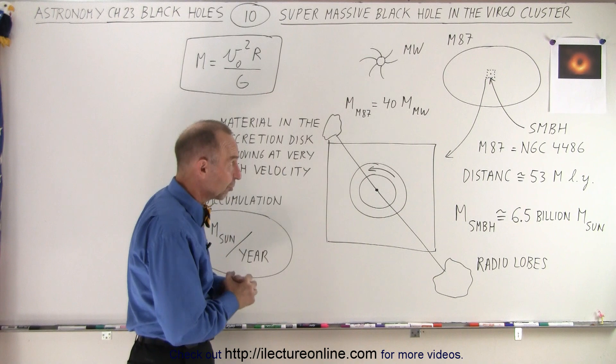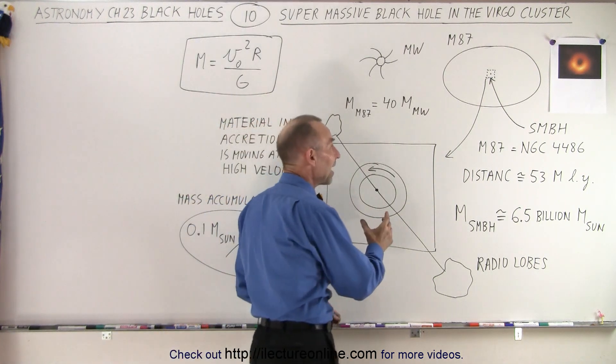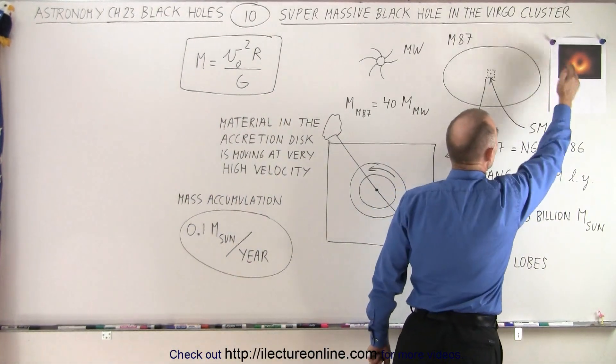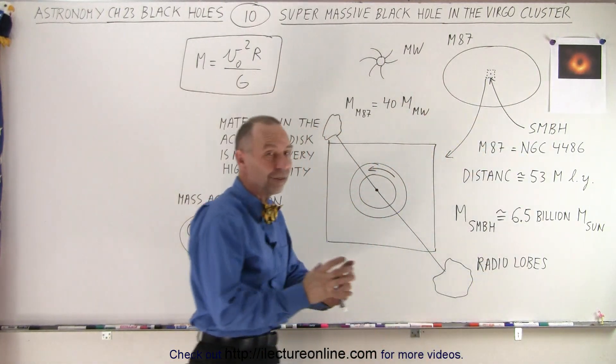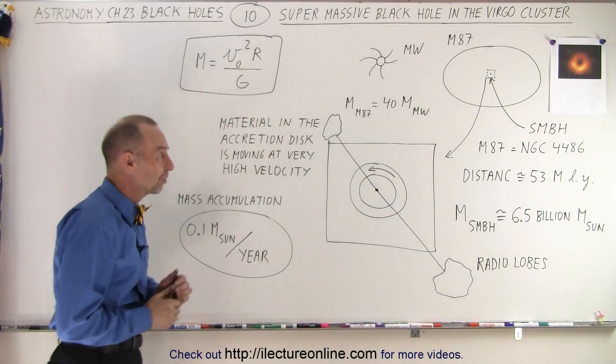So they're visible. We've taken pictures of those before, but for the first time we actually took a picture of the accretion disk of the black hole itself at the very center of that enormous galaxy.